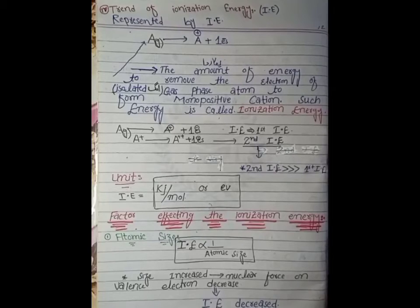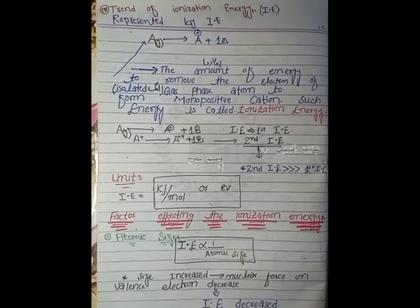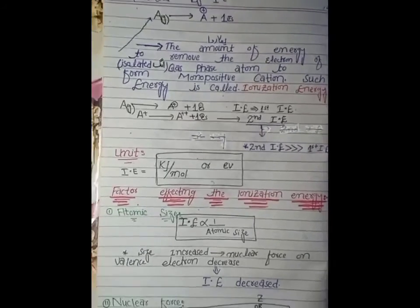Now, the unit of ionization energy. The unit of ionization energy is kilojoule per mole or electron volt.